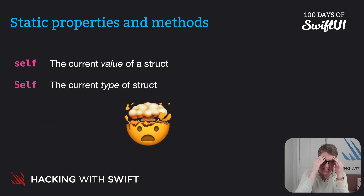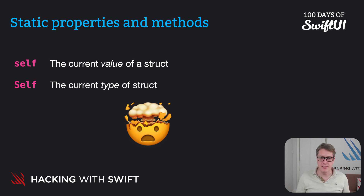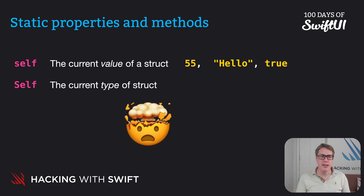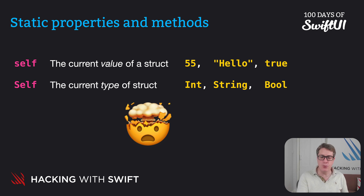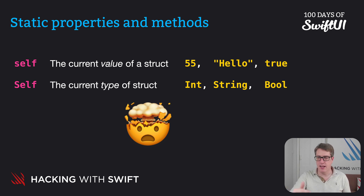Think of it like this: when we have the value, it's 55 for Integer, "hello" for a String, true for a Boolean — that's self with a lowercase s. With an uppercase S, Swift uses that everywhere for types: capital I in Int, capital S in String, capital B in Bool. So it makes sense for Self with a capital letter to refer to the type, and lowercase, like true, is for the current value.